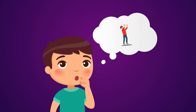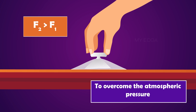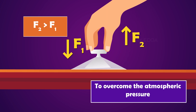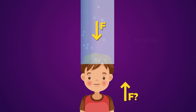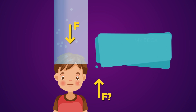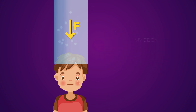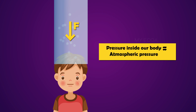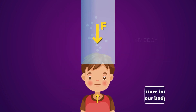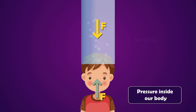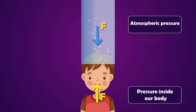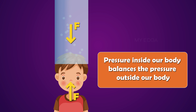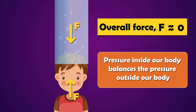You might be thinking that even after applying this much pressure, we are still alive and we are not crushed under this force. As we know, to overcome the atmospheric pressure, the force applied should be large enough. But we are not applying any force by ourselves — so how is it possible? This is because on Earth, the pressure inside our body is equal to the atmospheric pressure. The pressure inside our body presses outward while the air pressure outside pushes inward, so it balances the pressure from the outside, meaning there is no overall force on us and we don't get crushed.